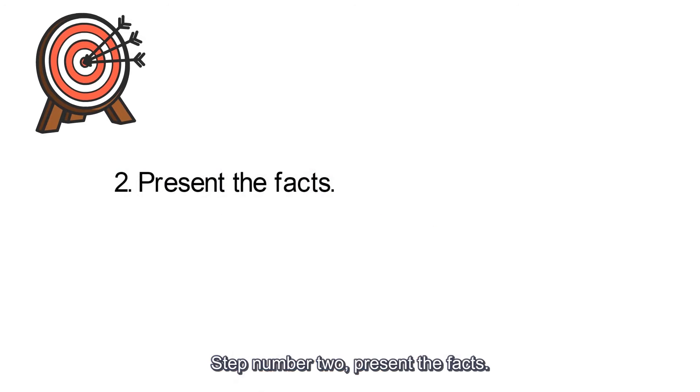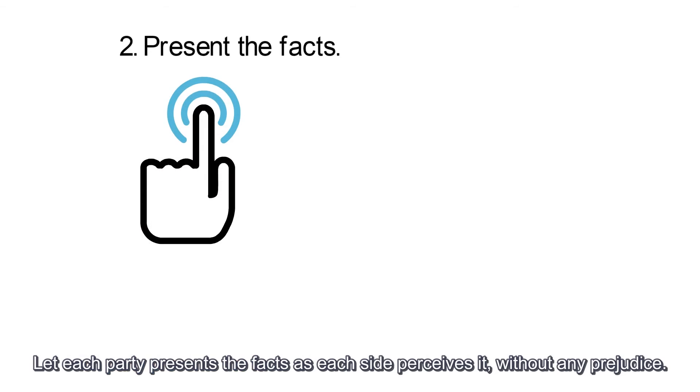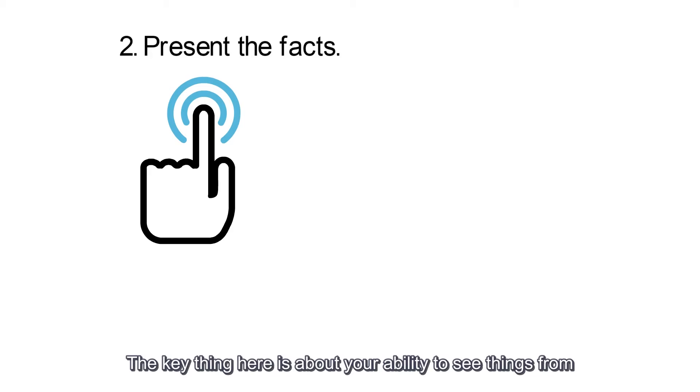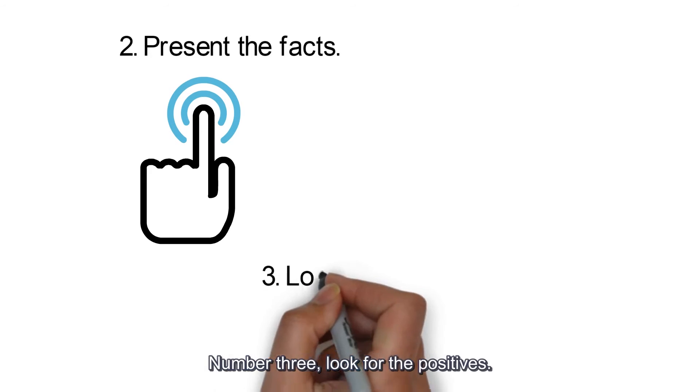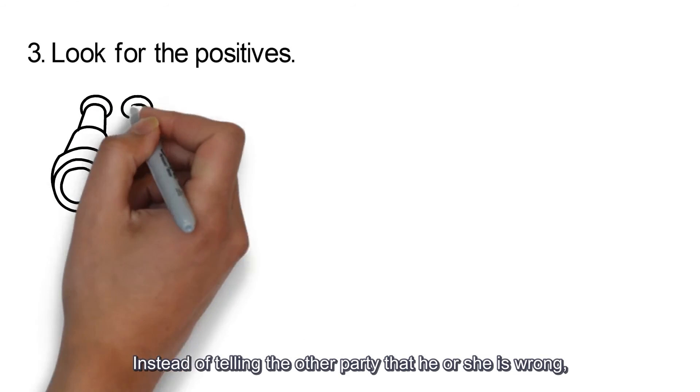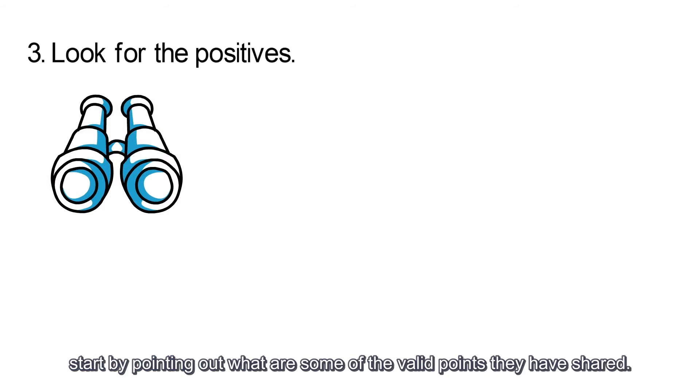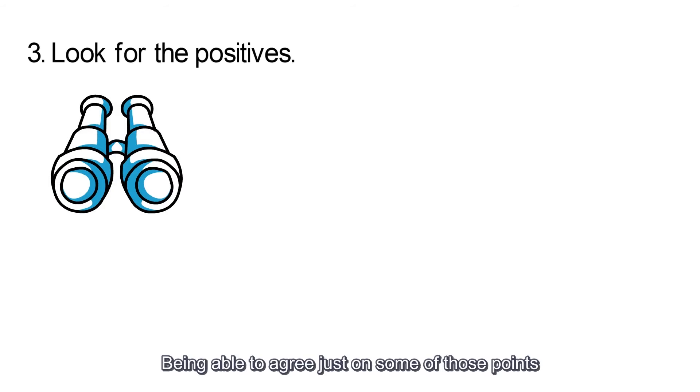Step 2. Present the facts. Let each party present the facts as each side perceives it without any prejudice. The key thing here is about your ability to see things from the other person's point of view and vice versa. 3. Look for the positives. Instead of telling the other party that he or she is wrong, start by pointing out what are some of the valid points they had shared. Being able to agree just on some of those points can go a long way in resolving your conflicts.